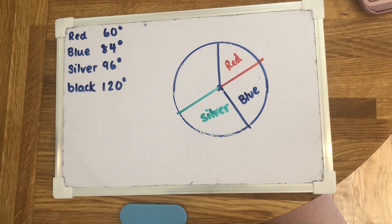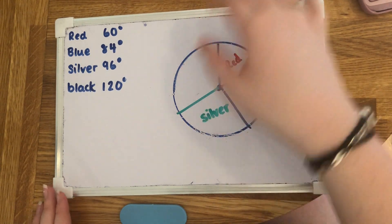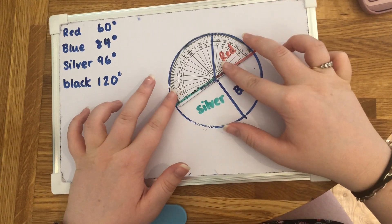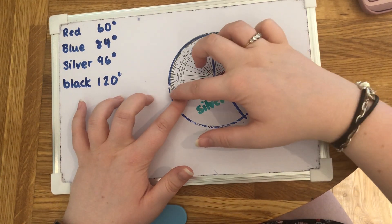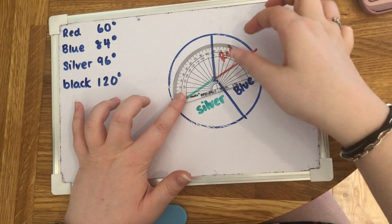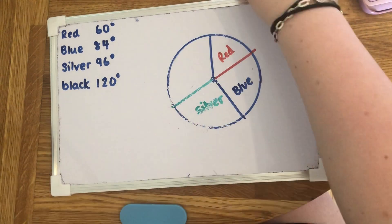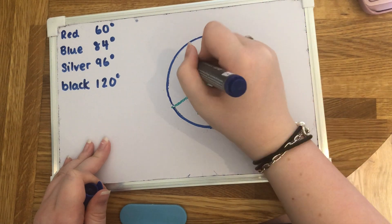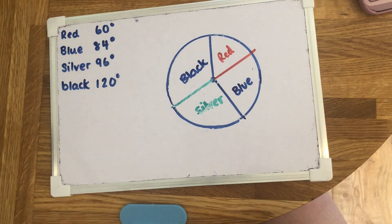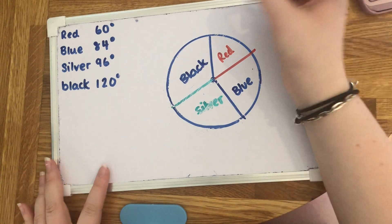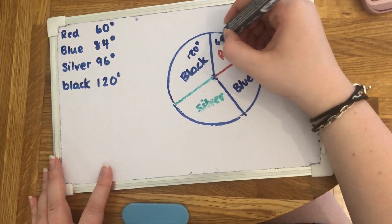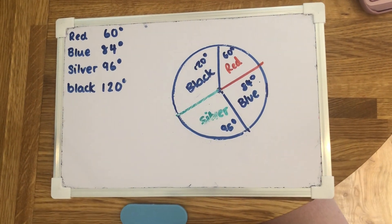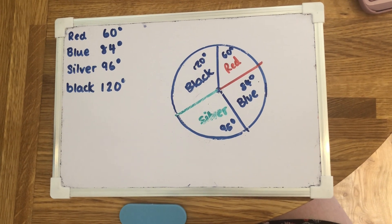Now because there's only one left we know that that's going to be the black one. But it is really good that we just check that that is 120 degrees. Perfect, 120 degrees. This is the black one. You don't have to write the degrees in the circles if you don't want to but you can: 120, 60, 84, 96. So that is how you construct pie charts.